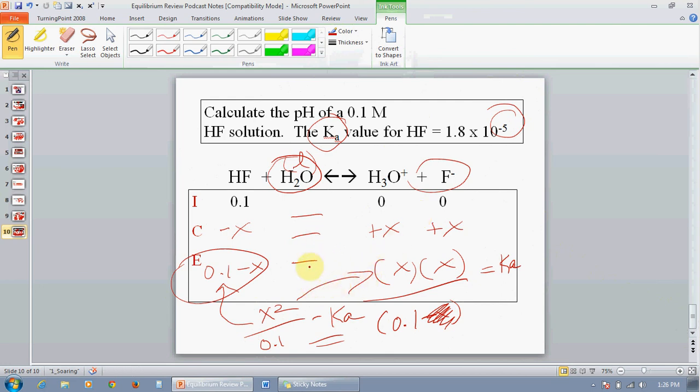This is very typical of weak acid problems. The stoichiometry is always going to be a one-to-one ratio, so these are going to be easy and straightforward to use.